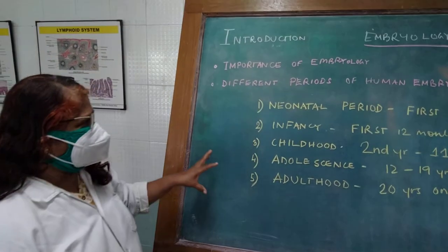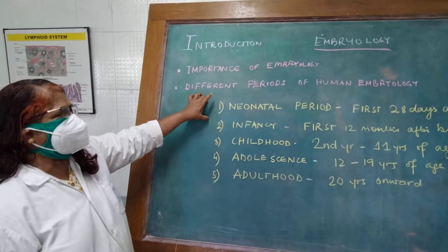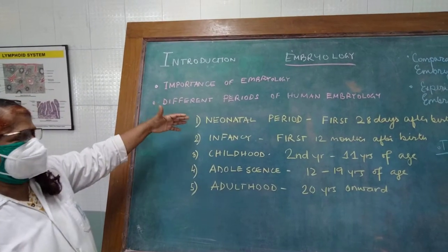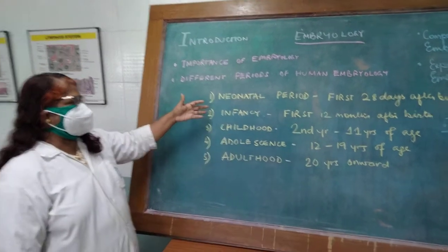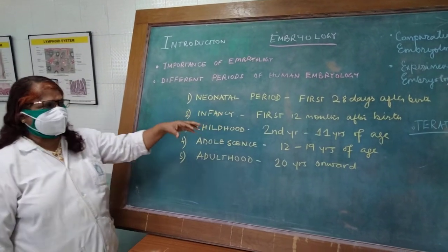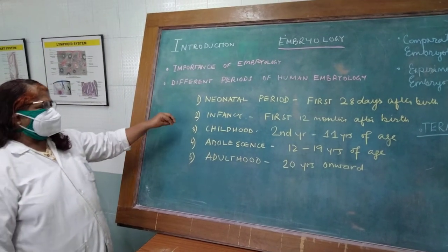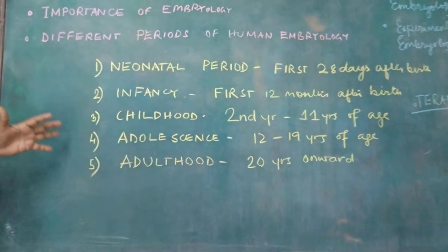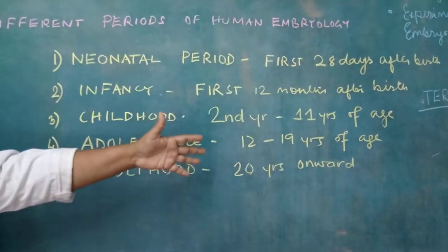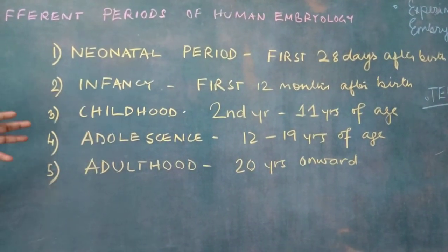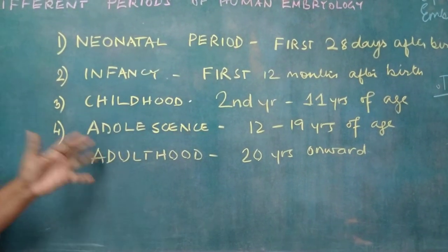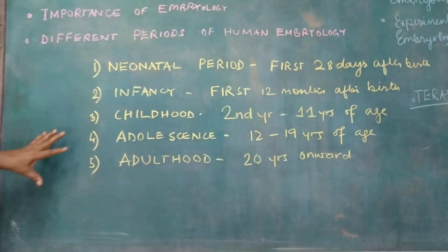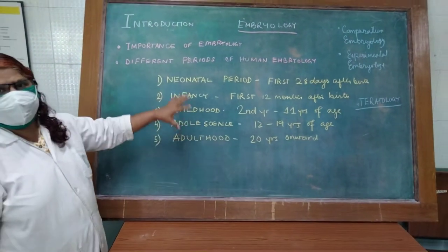There are different periods of human development. The neonatal period is the first 28 days after birth, and the baby is called a neonate. The second is infancy, which is the first 12 months after birth. Then comes childhood, which is from the second year to 11 years of age. Adolescence, also called puberty, is from 12 to 19 years of age. The fifth stage is adulthood, which is 20 years onwards into old age.